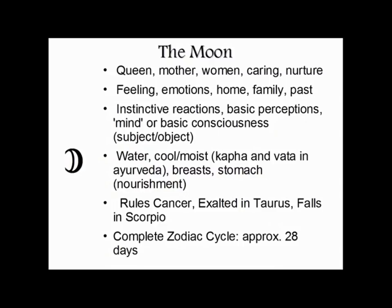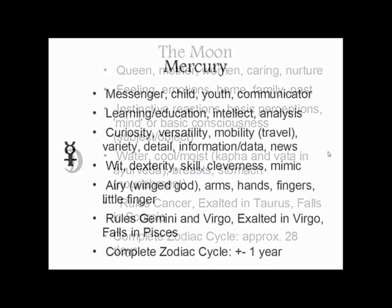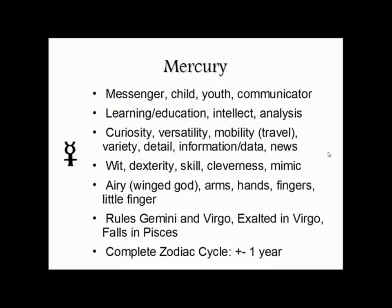Each of those seven weekdays are ruled by the planets — Sunday is the Sun's Day, Monday is Moon Day, Tuesday is Mars Day, Wednesday is Mercury Day, and so on.